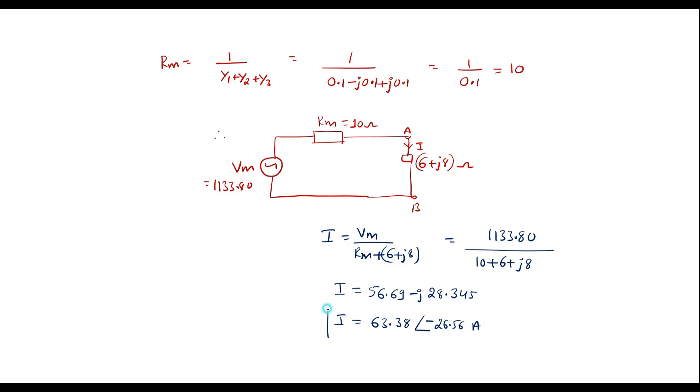This is the current flows through 6 plus J8 ohm and this is calculated using Millman's theorem. Here while calculating Vm and Rm we should remember that keep your calculator in complex mode as well in degree mode. This is for information, thank you for watching.